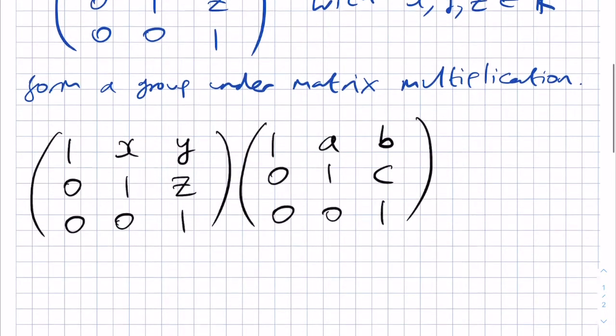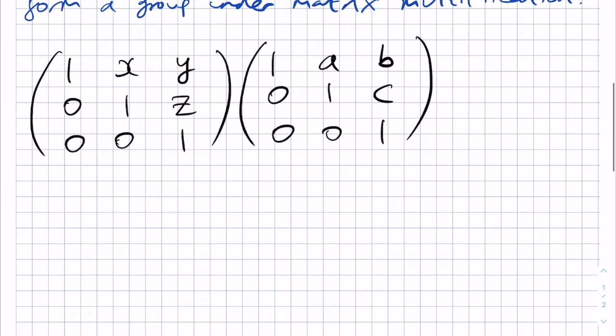So, if we multiply these together element-wise, then we have 1 up here. This times this gives us A, and this times this gives us X, with then a 0 on the end, so A plus X. The next one's a bit more complicated, we have B plus CX plus Y.